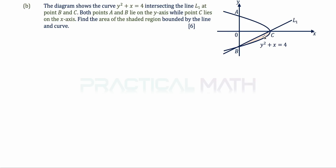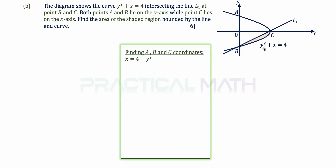We need to find coordinates of A, B, and C — specifically B and C to determine the equation of L1. Setting x as the subject of y² + x = 4 gives x = 4 - y². We make x the subject because we will integrate with respect to the y-axis, so we need expressions in terms of y.